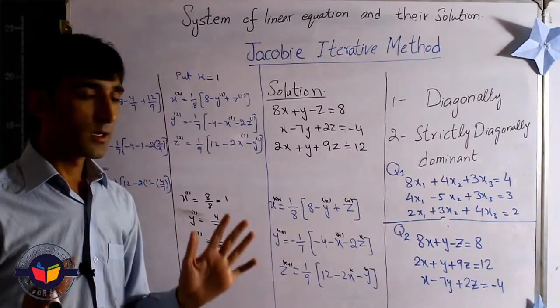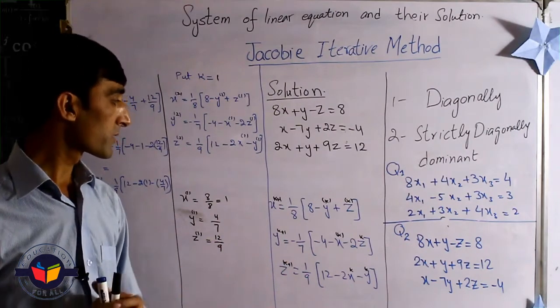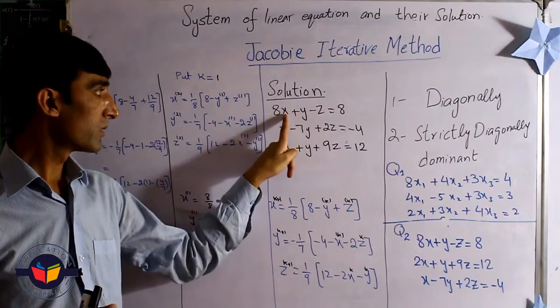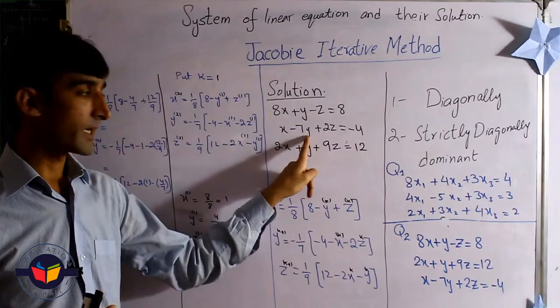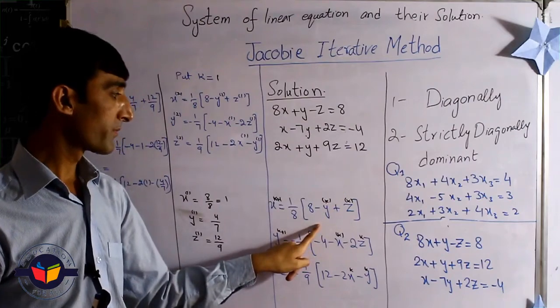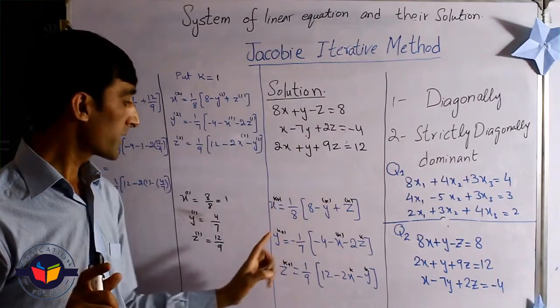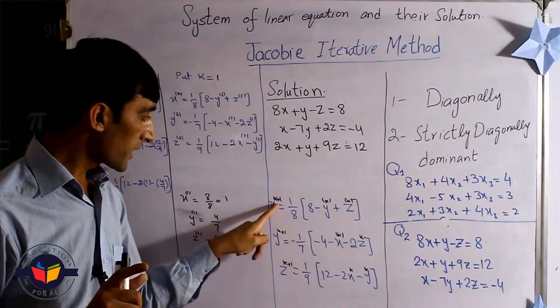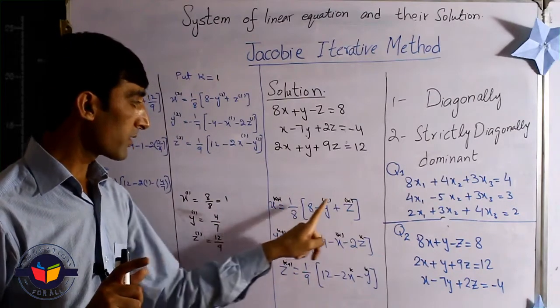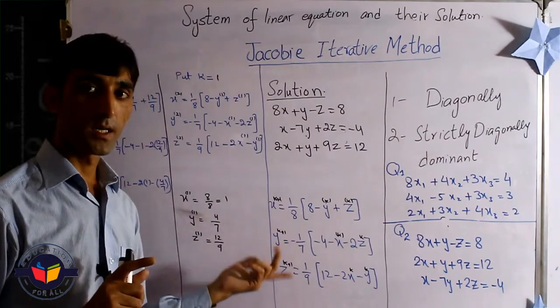Now students, how to solve this one by Jacobi Iterative Method? For this purpose, first of all, we find the value of x from the first row, y from the second row, and z from the third row, and we rewrite this in this form. When we calculate the value of x, y, and z, then we put k+1 on the left side and k on the right side for all of these terms.